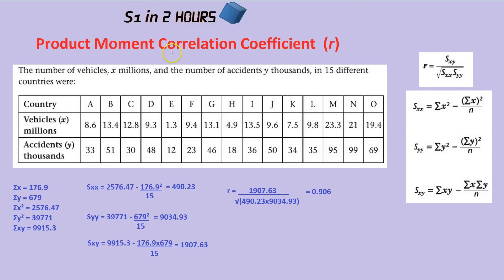The product moment correlation coefficient sounds like a mouthful, and it is, but it's in the formula book. The formula book will say R, which is this product moment correlation coefficient, equals SXY divided by the square root of SXX times SYY. Each of those items are given to you again in the formula booklet, so you can work them all out.